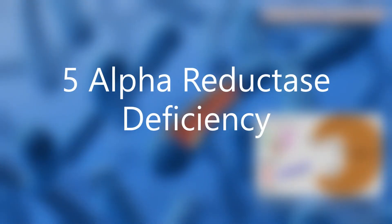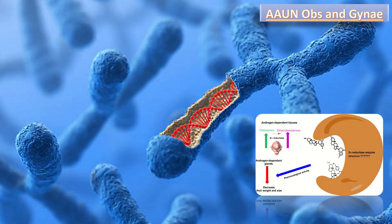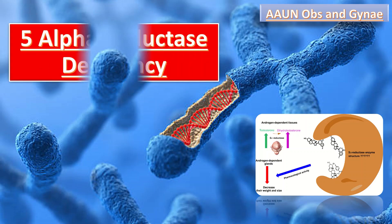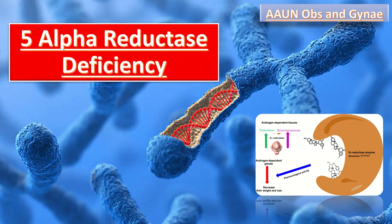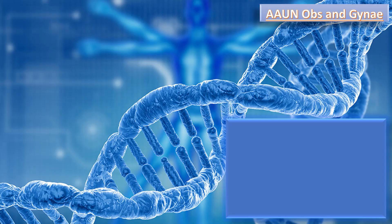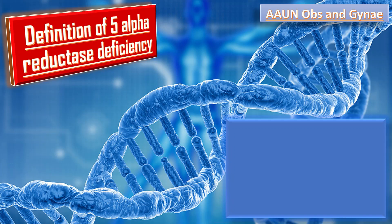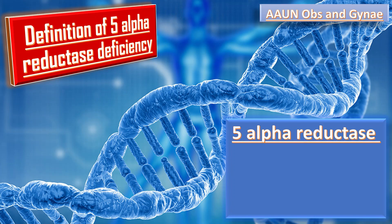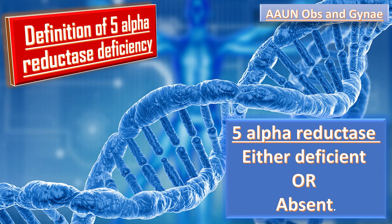Today we will talk about a very important topic of genetics, and that is 5-alpha reductase deficiency. It is a genetic disorder in which a protein or enzyme called 5-alpha reductase is either deficient or absent altogether.